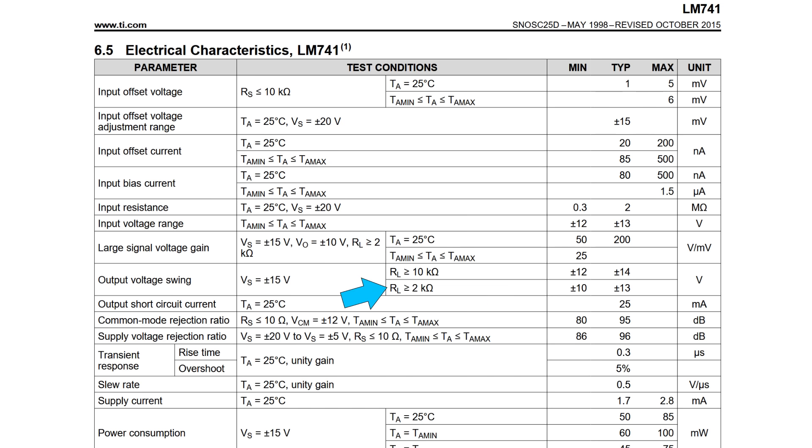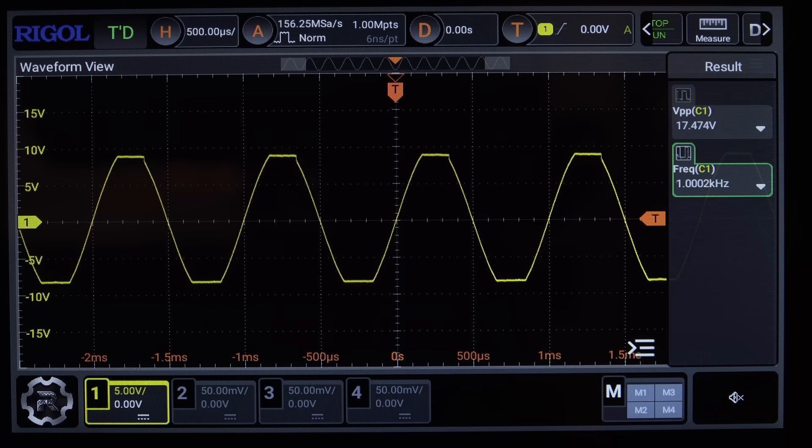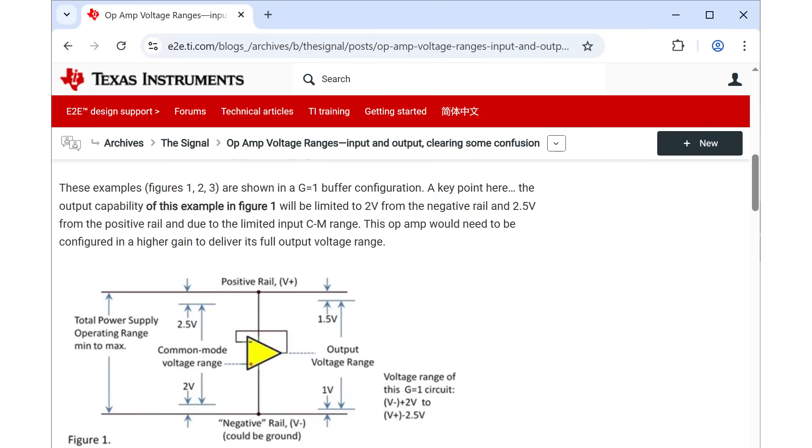And the output swing gets worse depending on how heavy the load is. Look at how much worse it gets when I add or remove a 1kohm resistor as a load. Now, I don't want to get into detail in this video, but it's also worth mentioning that not only is output voltage swing an issue, but input voltage swing is also an issue. Imagine an op-amp that can't amplify signals that are too close to the circuit's ground. Not good.